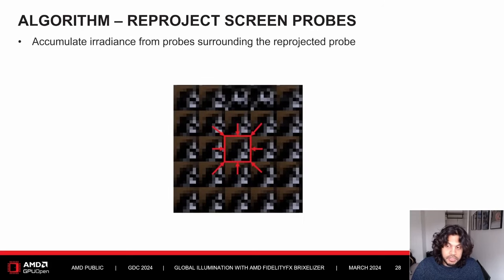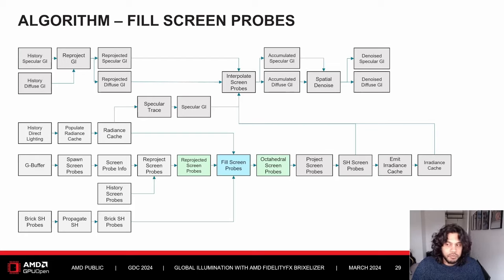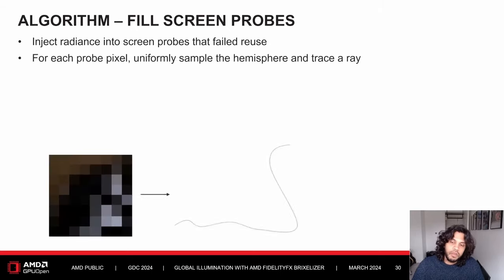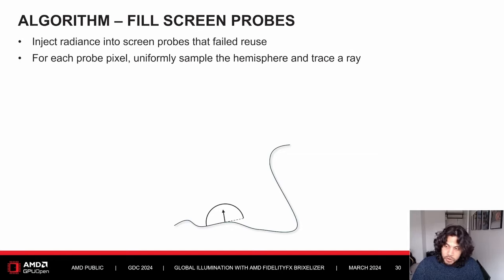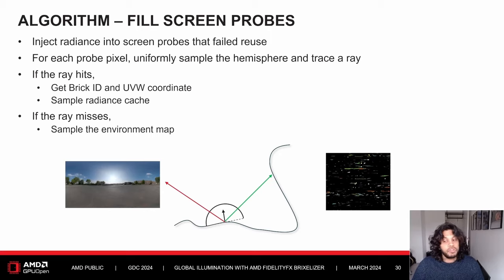We also share irradiance from the probes surrounding the reprojected probe, using normal and position similarity to weigh their contributions. It's now time to trace rays from our screen probes and add new radiance data. If a newly spawned probe fails to reuse a probe from the last frame, we inject new radiance into it. For each probe pixel, we uniformly sample the hemisphere and trace a ray using Brixelizer. If the ray hits, we use the Brick ID and UVW coordinate to sample the radiance cache; if it misses, we sample the environment map.